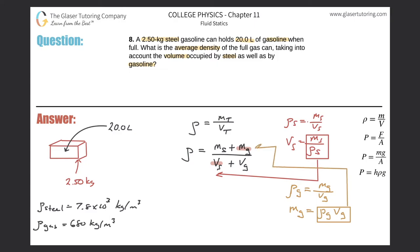The overall equation for average density now becomes: the mass of steel plus the density of gas multiplied by the volume of gas, all divided by the mass of steel divided by the density of steel, plus the volume of gas. Now we know everything in this equation to calculate.